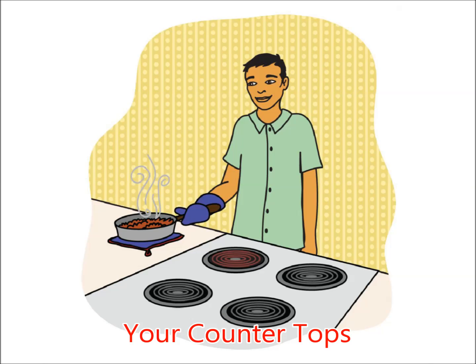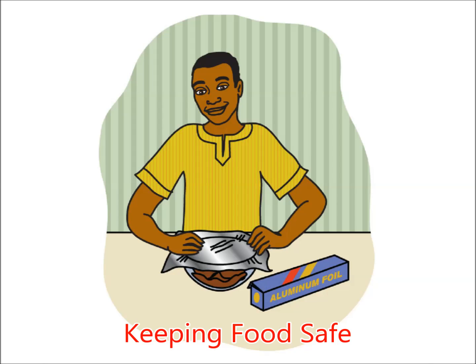Your countertops. Never put a hot pan directly on a countertop. Use a hot pad or dish towel under the hot pan to avoid burning the counter. Keeping food safe. Never leave food out on the counter without covering it with plastic wrap, foil, or a dish towel. It is better to cover food and keep it in the refrigerator or freezer. Clean the shelves of the refrigerator regularly with soap and water.